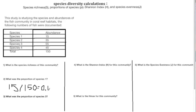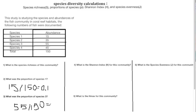We could calculate the proportion for each of the species, so let's do one more. We're going to calculate the proportion of species 3. You take the number of species 3 present in the community, which is 55, and divide that by the total number, which is 150. You will then get your proportion of species 3, which is 0.37.